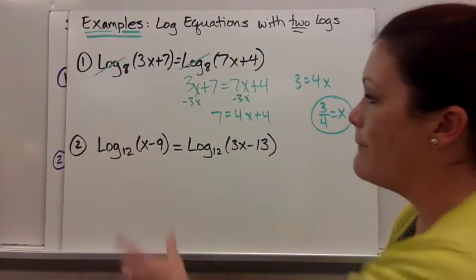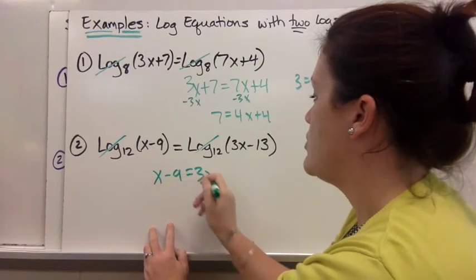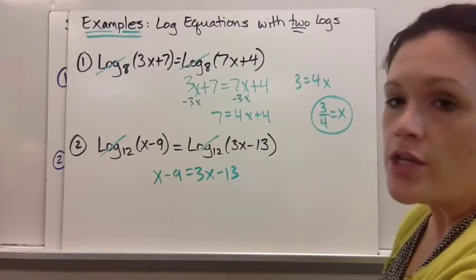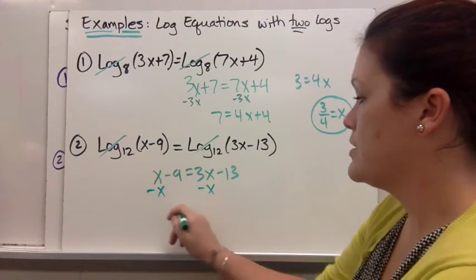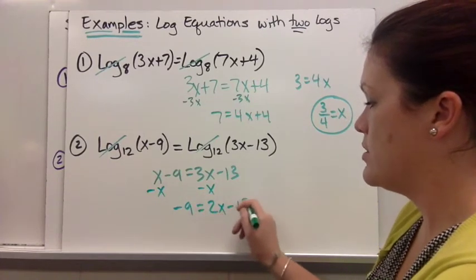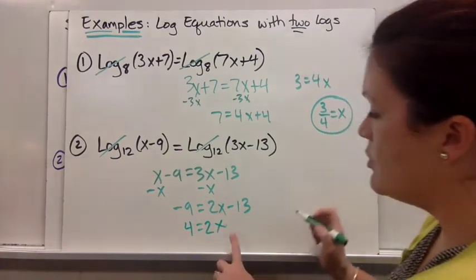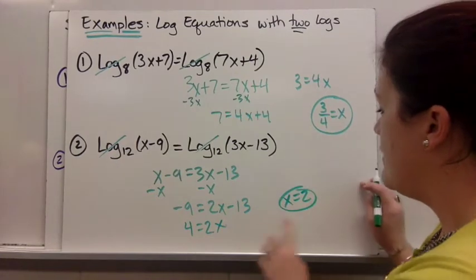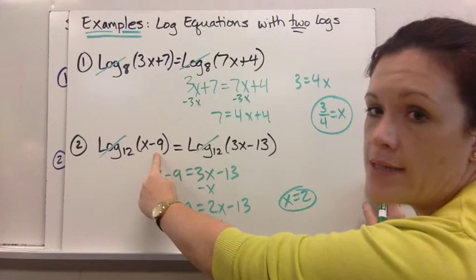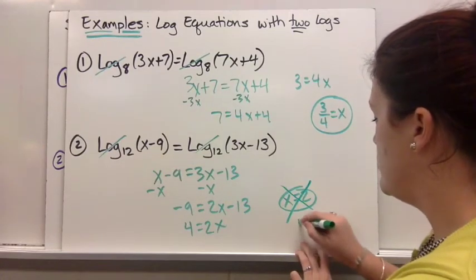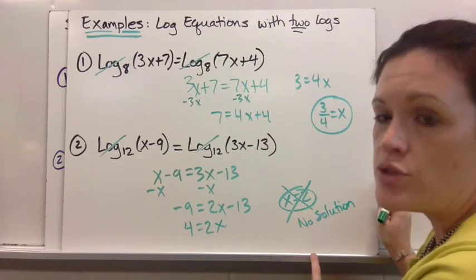For the next one, you have log base 12 on both sides, so you can take those away and bring down what's left. The remaining equation could be linear or quadratic. Here, negative 9 equals 2x minus 13. Adding 13: 4 equals 2x, and dividing by 2, x equals 2. But checking back: 2 minus 9 would be negative 7, so that's no good. This one has no solution, and if asked, x equals 2 is the extraneous solution.